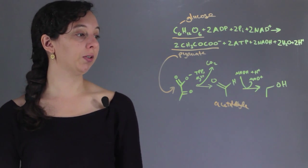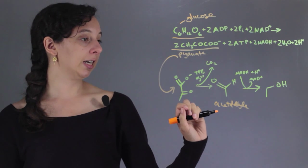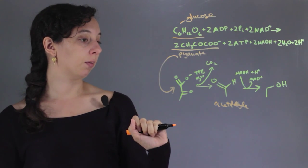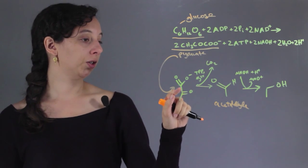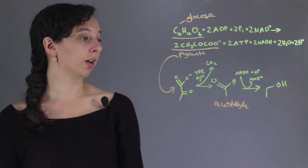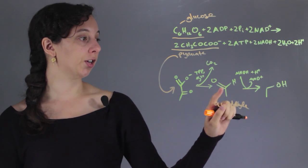And so once you have it here, you can see that this pyruvate molecule had one, two, three carbons, and this acetylaldehyde only has one, two.